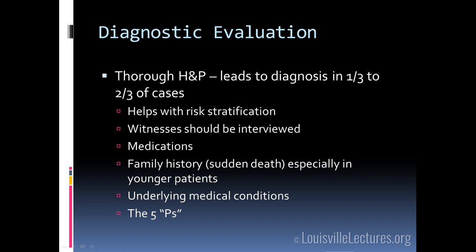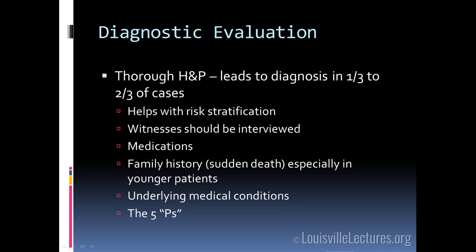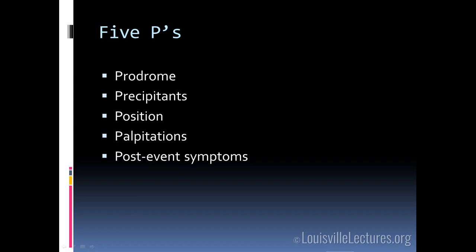In your history to tease out whether it's syncope, go over the five Ps: Was there a prodrome? Were there precipitants? What position was the patient in? Did they have palpitations? And did they have post-event symptoms? With the prodrome — lightheadedness, dizziness, blurred vision — that is very suggestive of neurocardiogenic or vasovagal syncope, or orthostatic hypotension. If they had nausea, sweating, or abdominal pain before the event, that also tends to support neurocardiogenic. If they were asymptomatic with sudden no-warning onset, that is more concerning for the possibility of cardiac syncope.